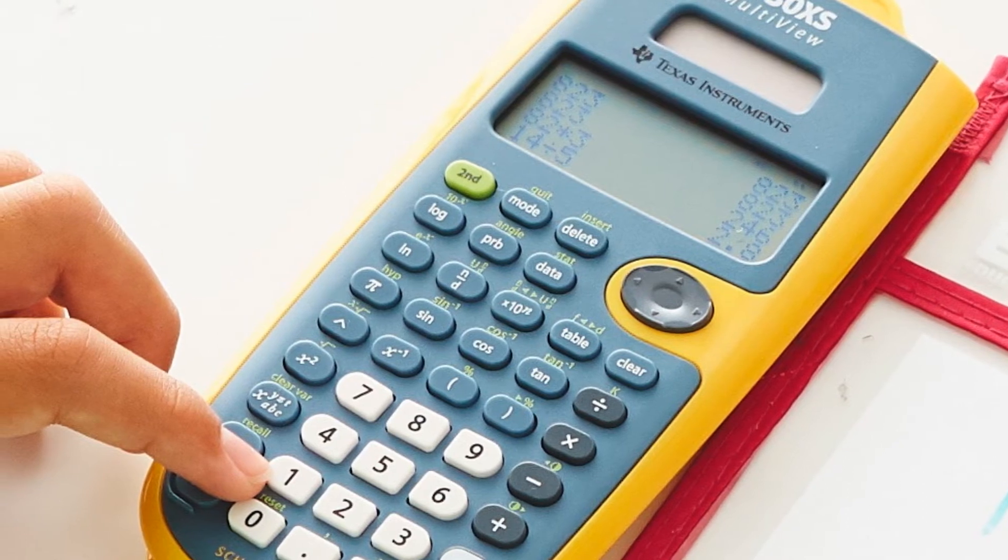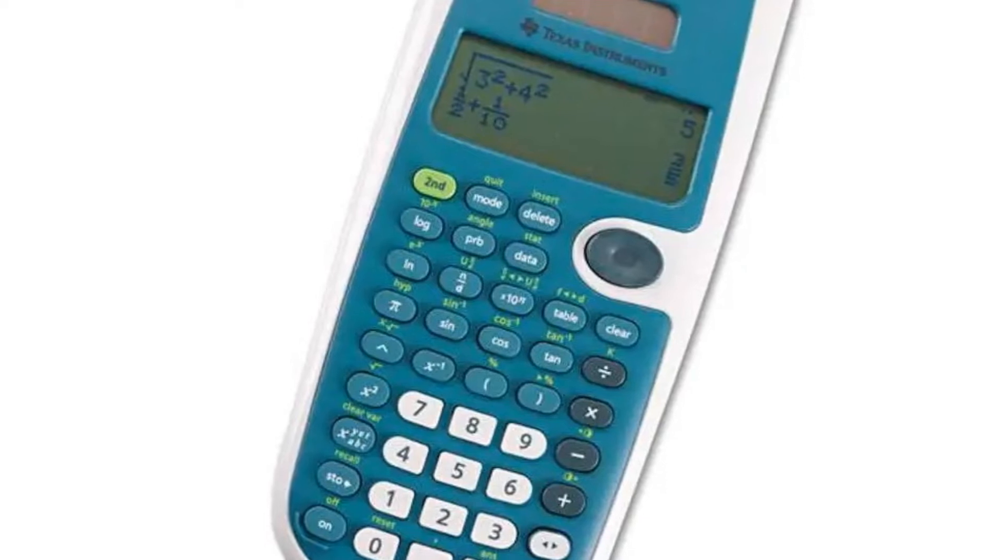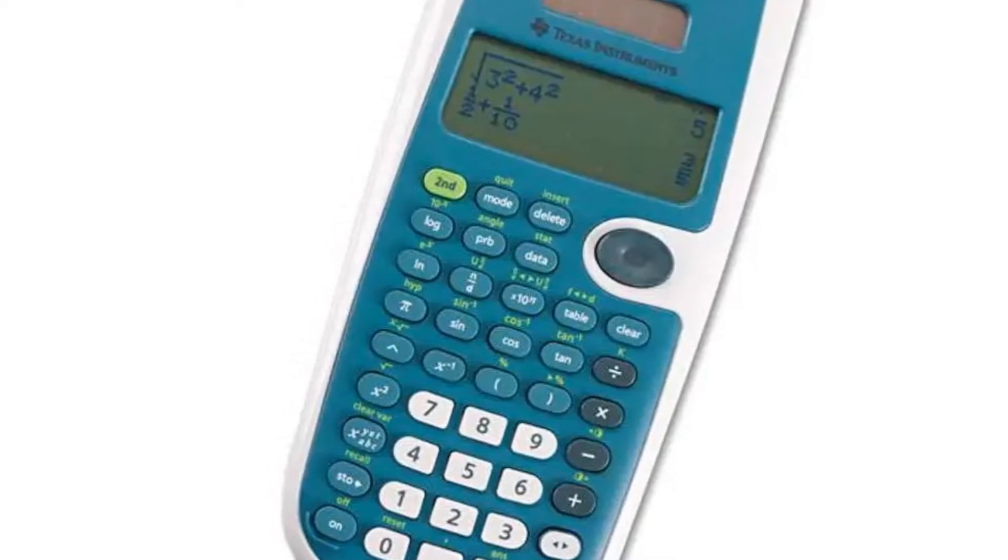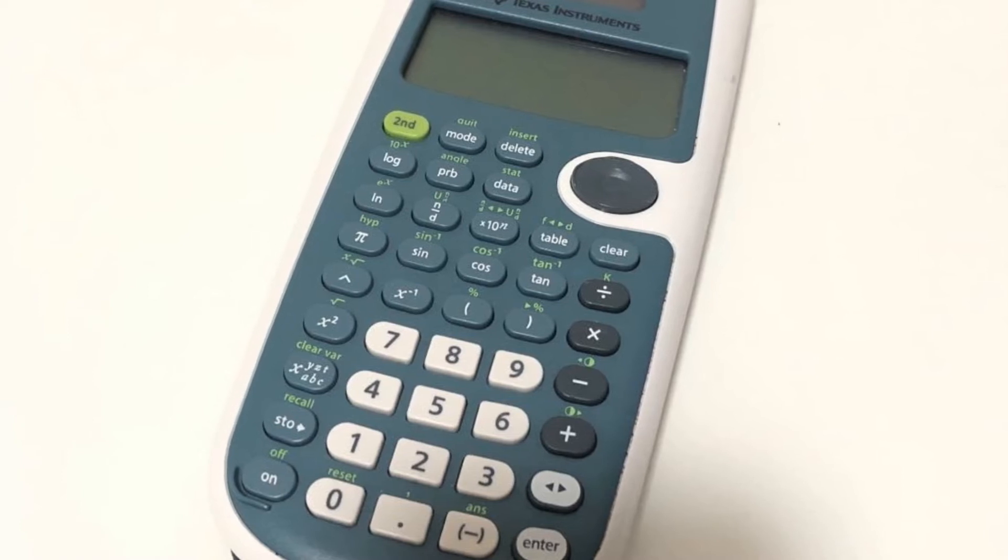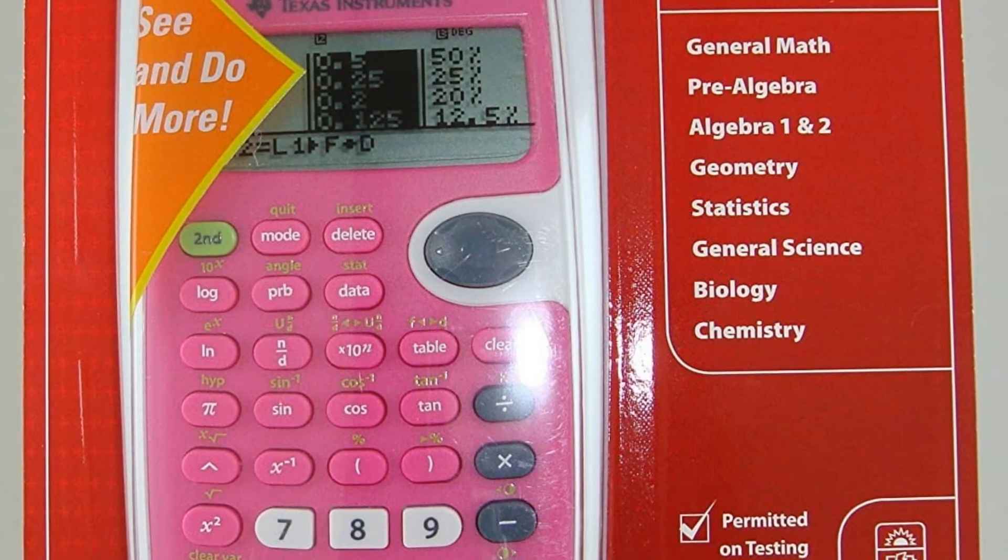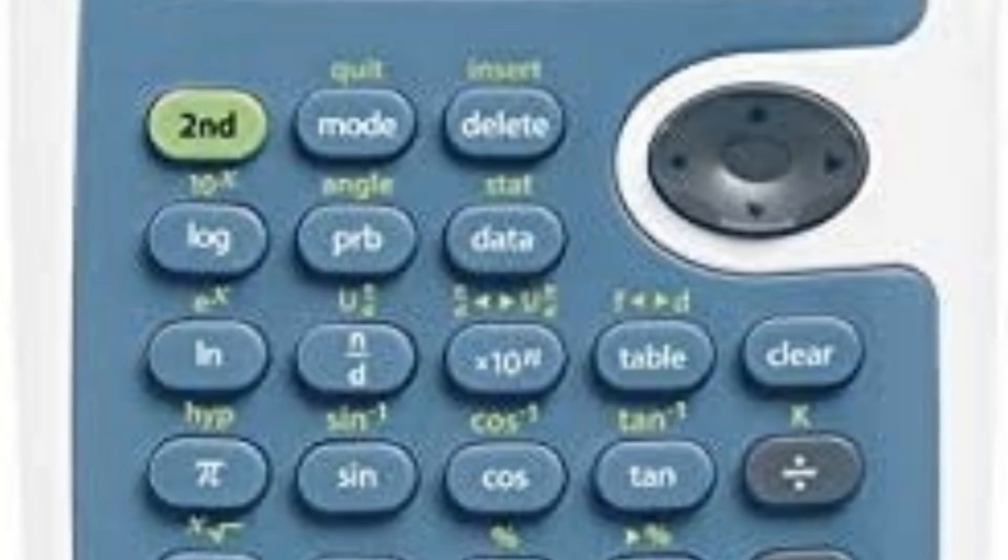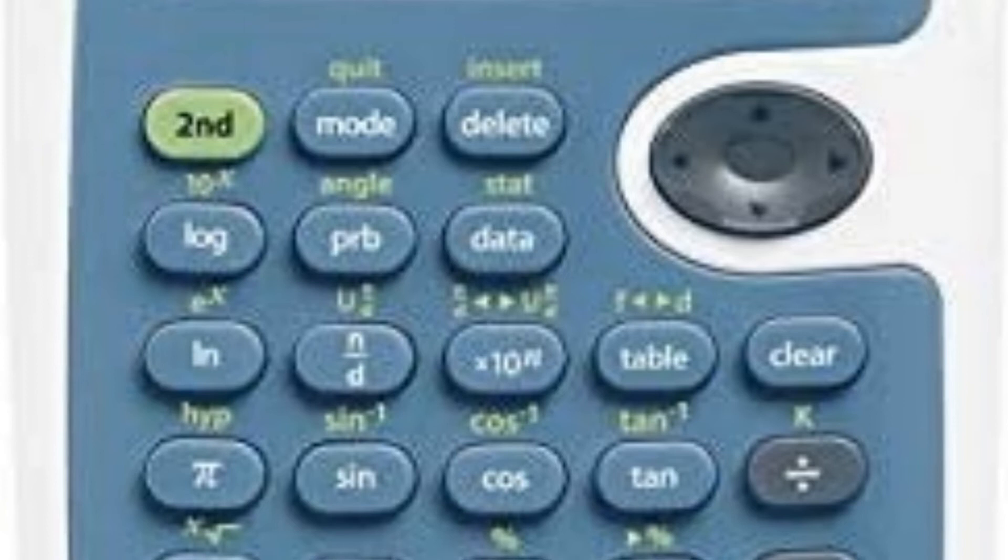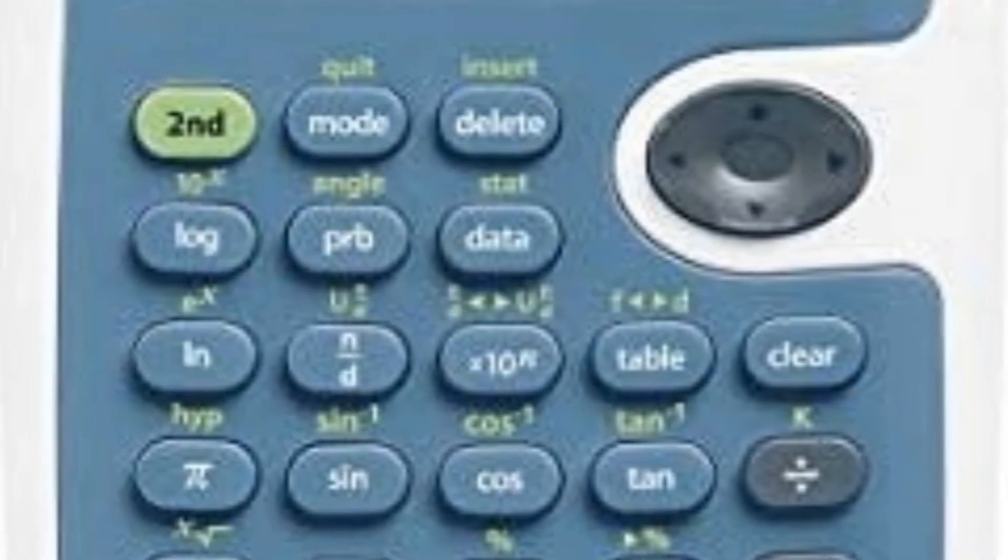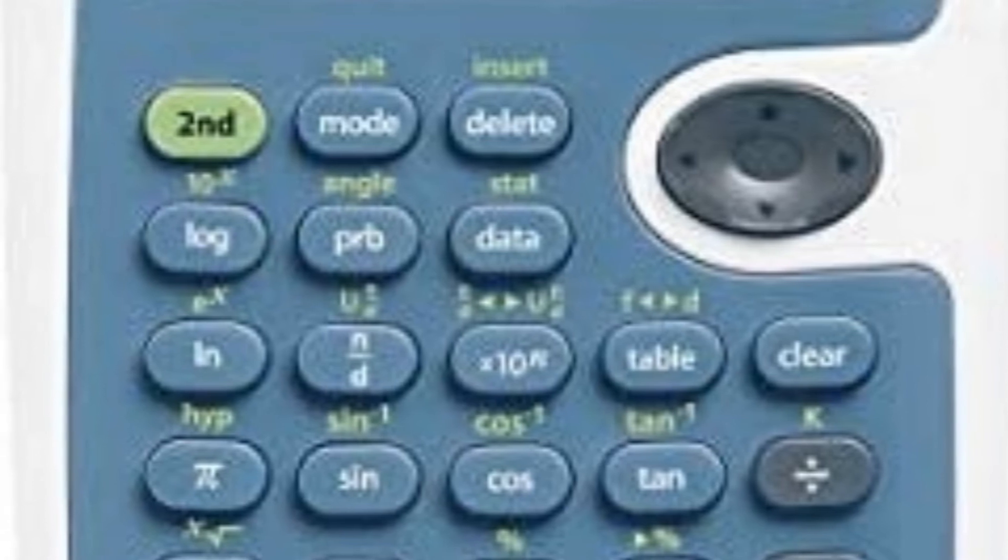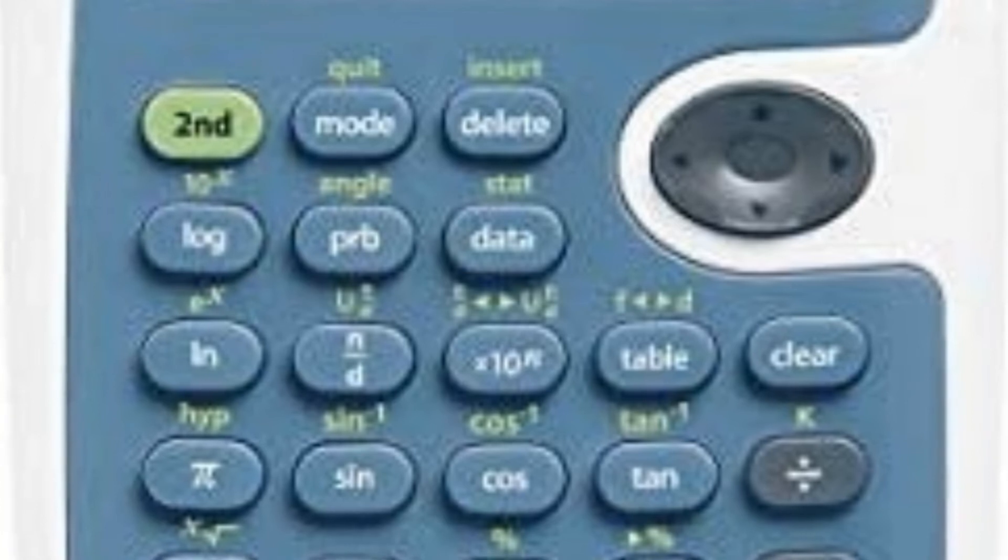Quickly view fractions and decimals in alternate forms by using the toggle key. Scroll through previous entries and investigate critical patterns, as well as viewing and pasting into a new calculation. Explore an XY table of values for a given function automatically or by entering specific X values. Power sources: battery, solar. Display notation: numeric. Number of display digits: not applicable. Display characters by display lines: 16x4. Unit of measure: each.